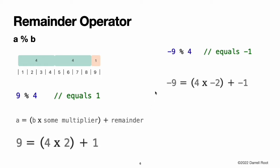The same method is applied when calculating the remainder for a negative value of a. Negative nine percent four equals negative one. Inserting negative nine and four into the equation yields negative nine equals four times negative two plus negative one, giving a remainder value of negative one. The sign of b is ignored for negative values of b. This means that a % b and a % negative b always give the same answer.